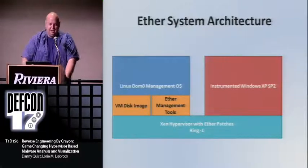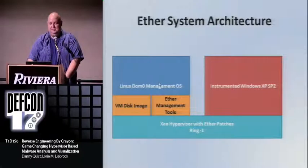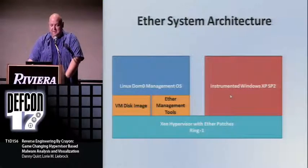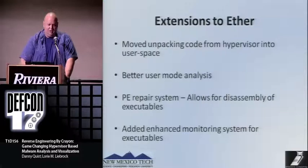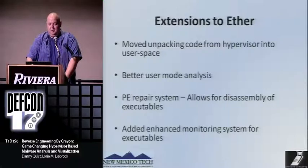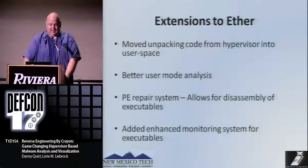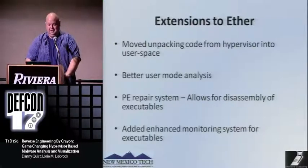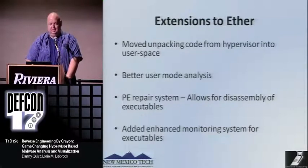The architecture starts with a Linux DOM0 management system — a Linux system where you run all your tools, containing the VM disk image and Ether management tools. This works with the Xen hypervisor, which has the Ether patches, and then works with an instrumented Windows XP Service Pack 2. I made a couple of extensions to Ether: I moved some unpacking code from the hypervisor into user space, added more user mode analysis, and repaired the portable executable rebuilding system so you can actually disassemble it inside of IDA.